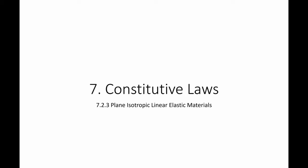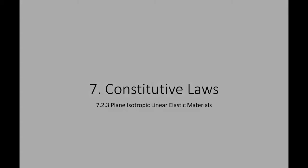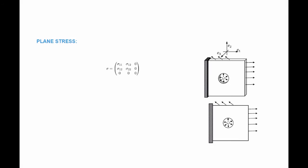In this video, we're going to study plane isotropic linear elastic material models. The first type is the plane stress model. Plane stress is the situation when the stress matrix is described by four non-zero components: sigma_11, sigma_12 = sigma_21, and sigma_22. The rest are zeros. These situations are usually for plates under plane states of stress.